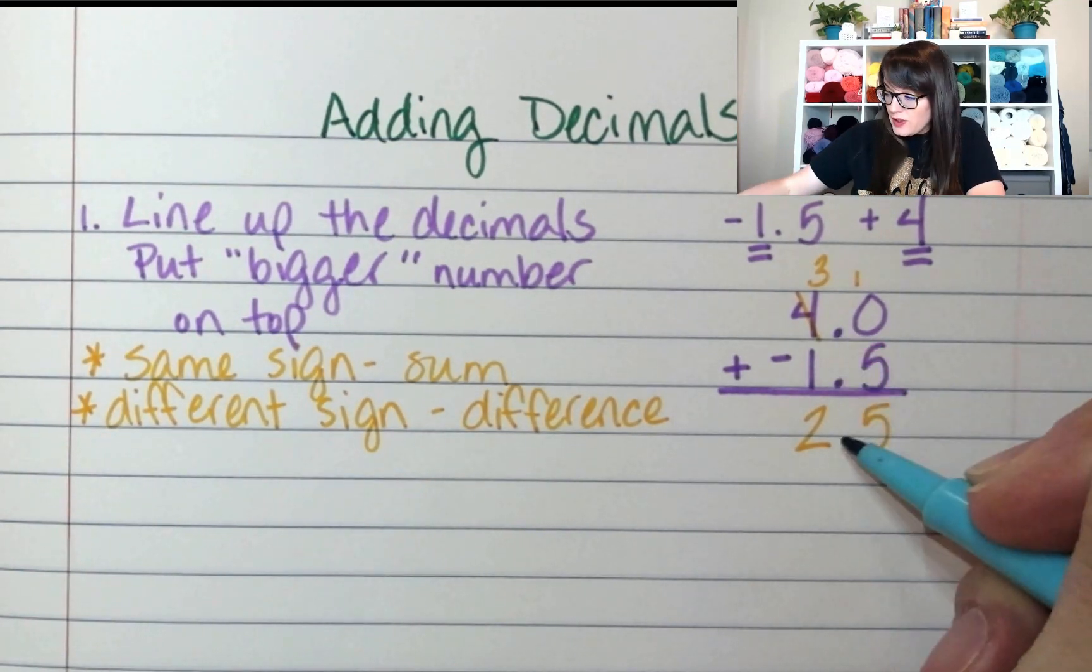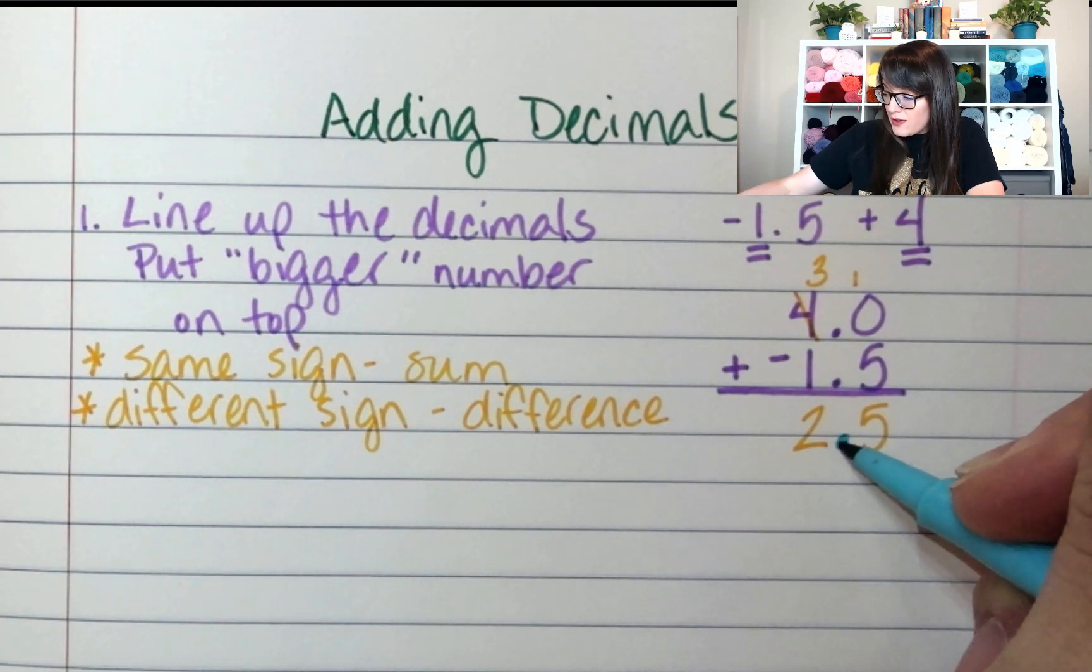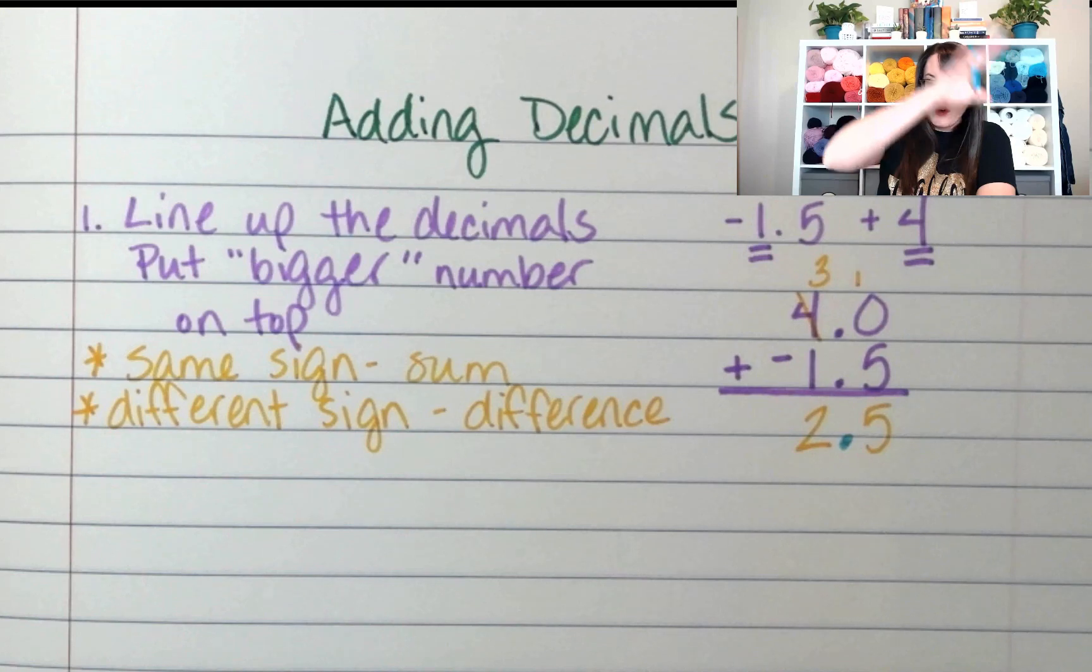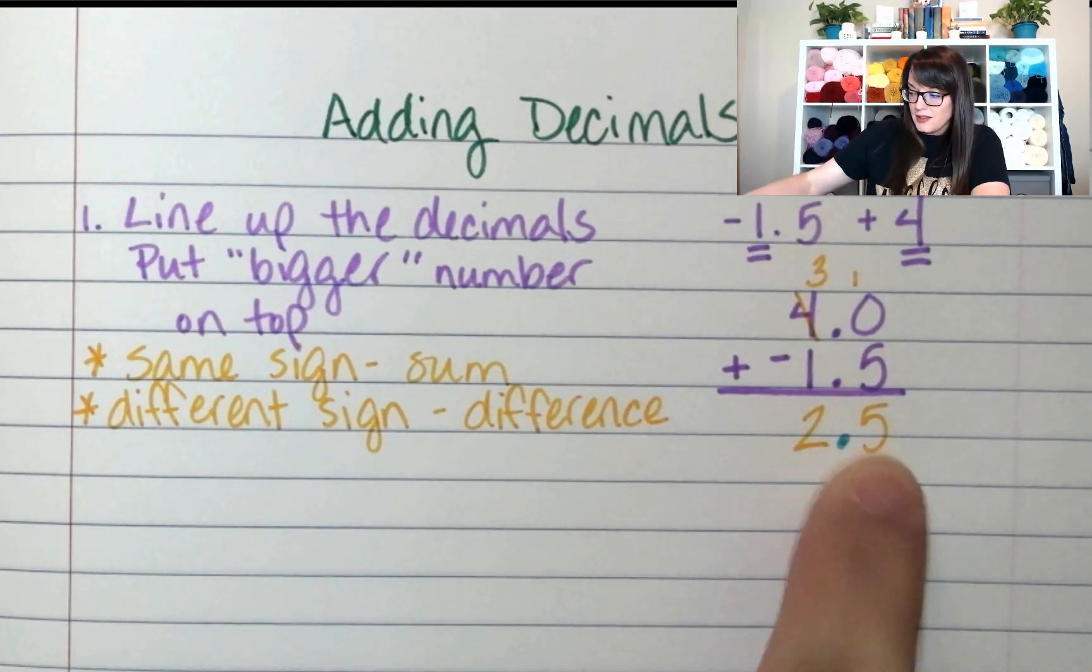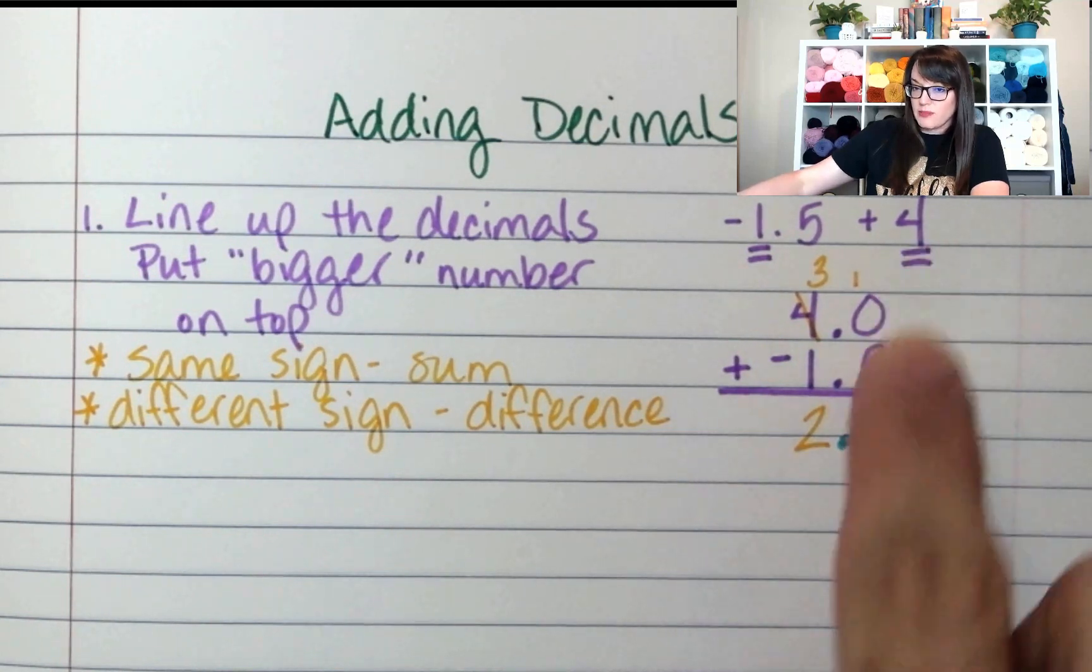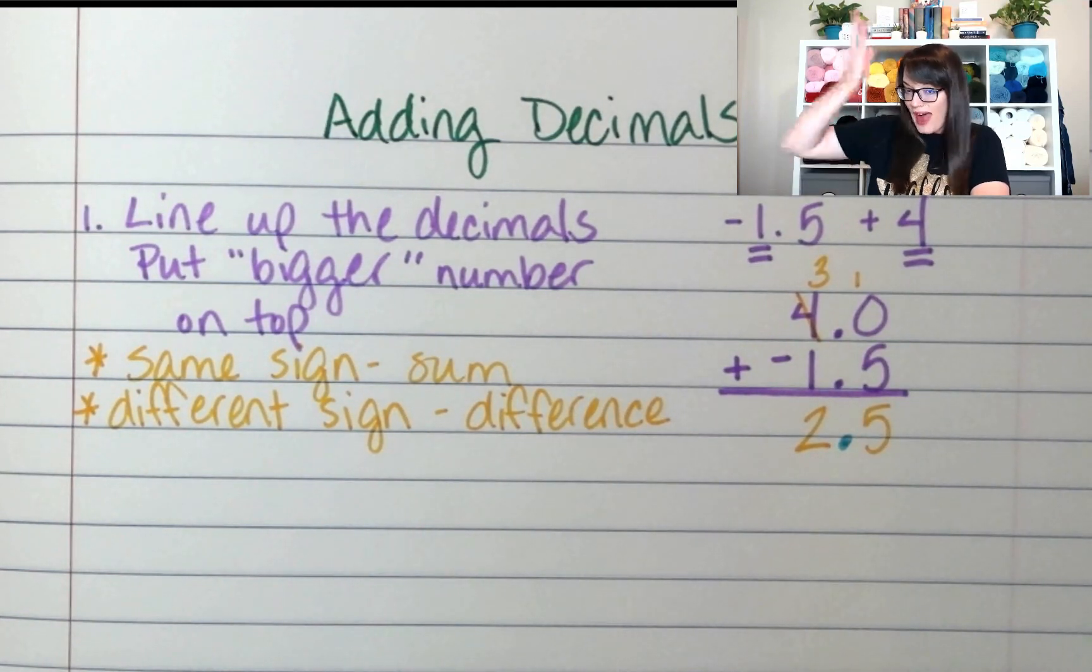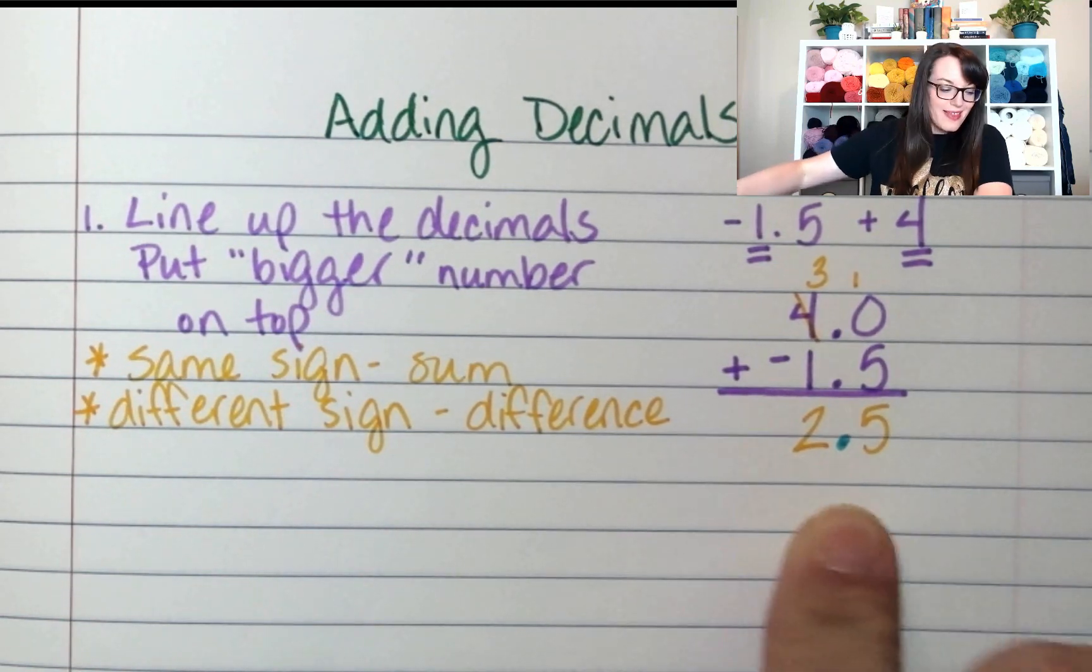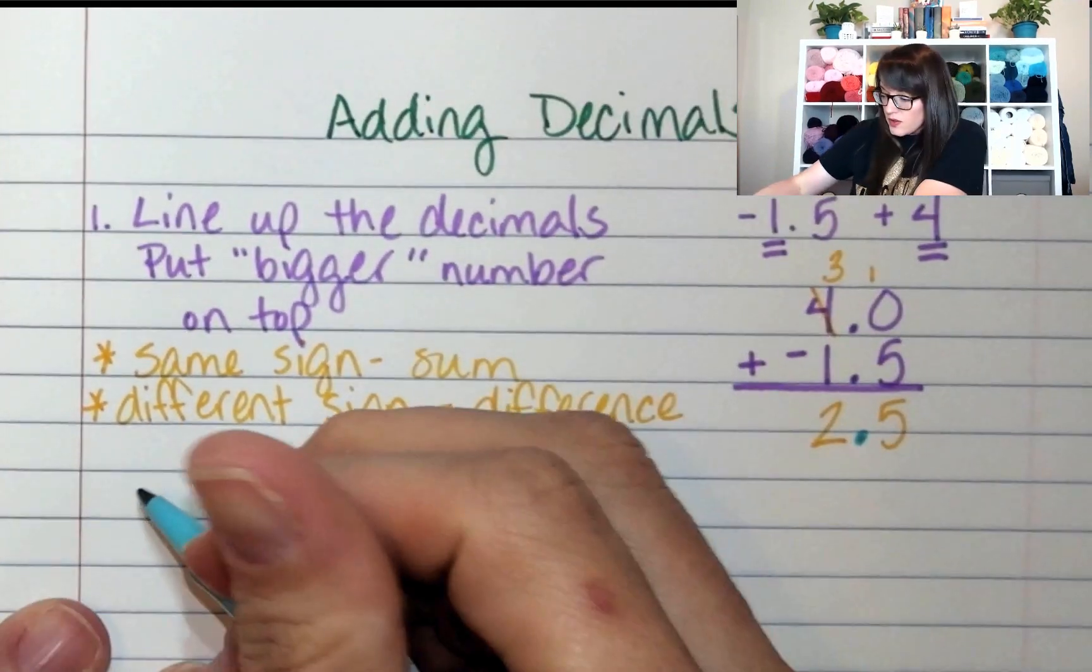We can't forget something very important. The decimal needs to go straight down. So it separates the ones from the tenths. The decimal has to stay between the ones place and the tenths place.